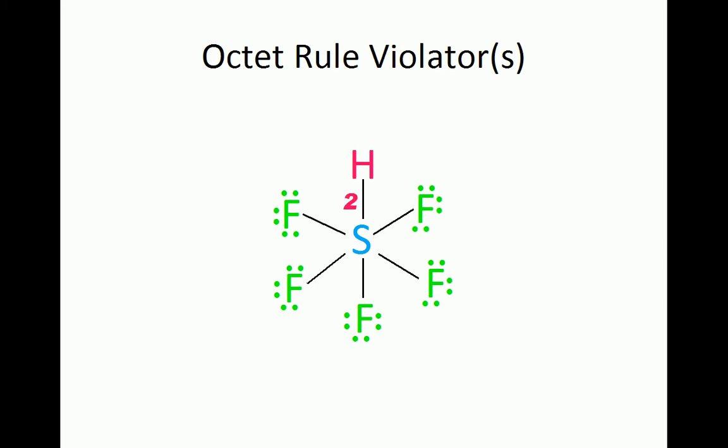We begin with Hydrogen and see that it has only two surrounding electrons. Next, we count the electrons around one Fluorine atom.